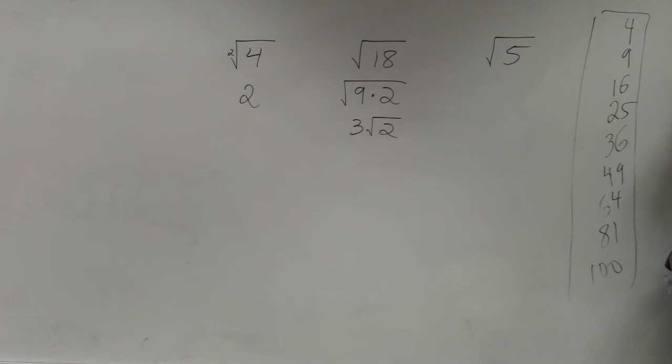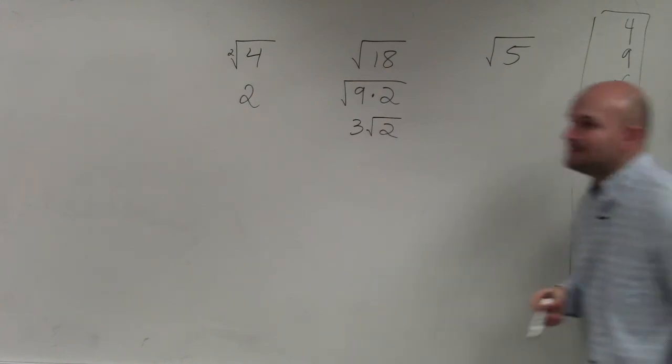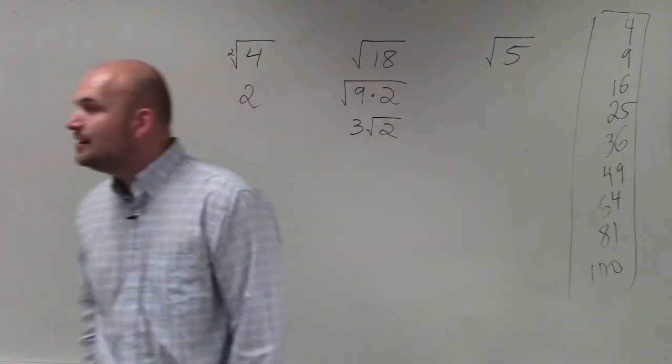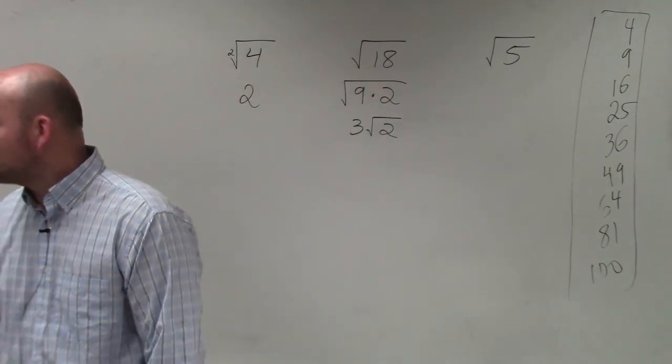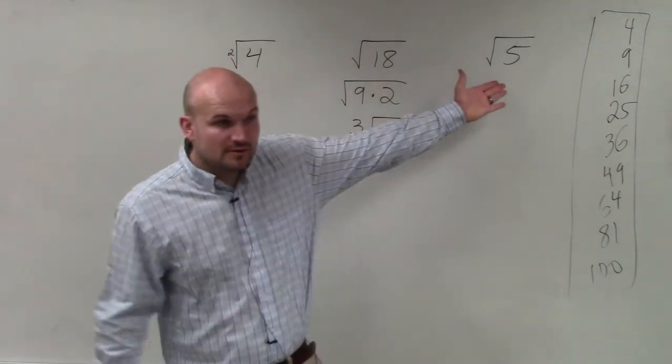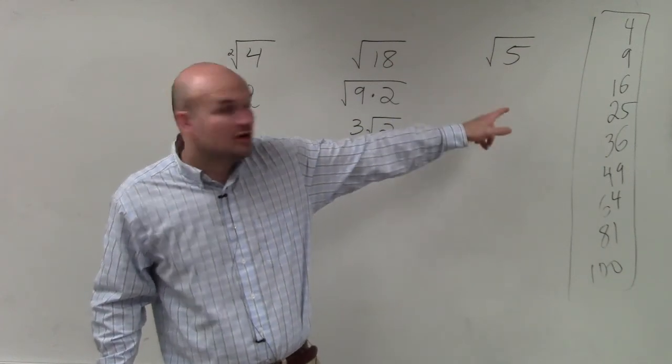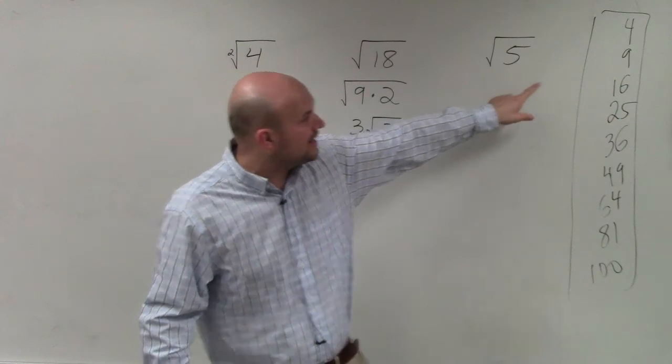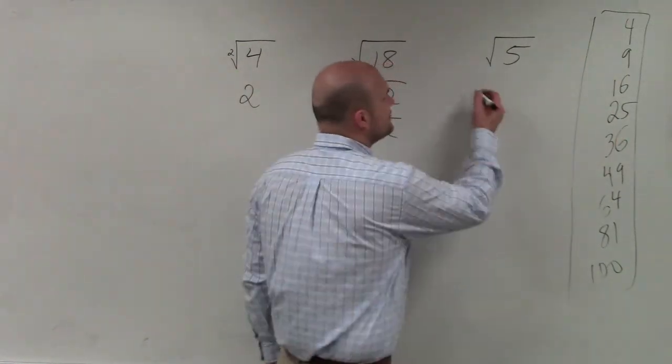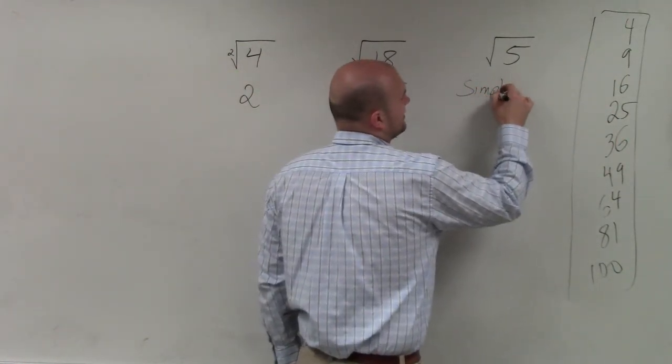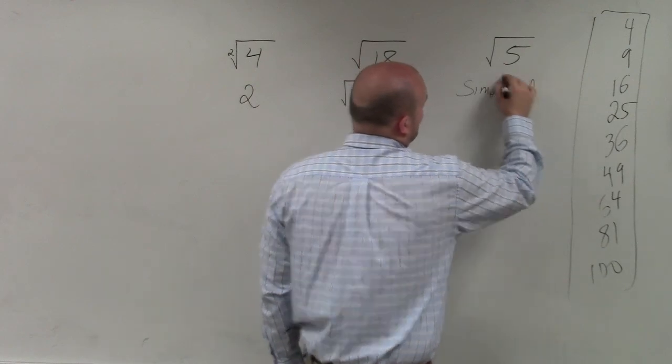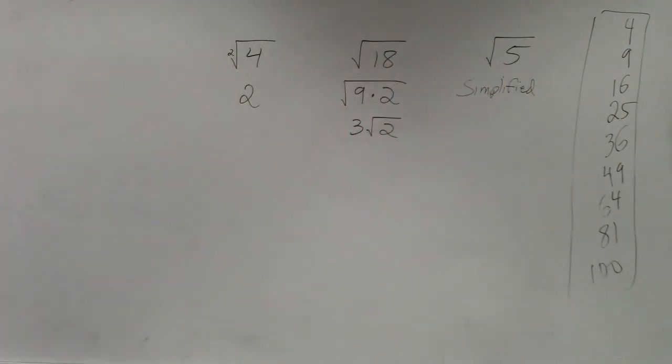And then there's a last example, ladies and gentlemen. We have √5. If I was going to try to take the square root of 5, first of all, we know there's not a whole number that we can multiply by itself to give us 5, nor can I rewrite 5 as a product of one of these square numbers. So therefore, this is just simplified and we'll just leave it as that.